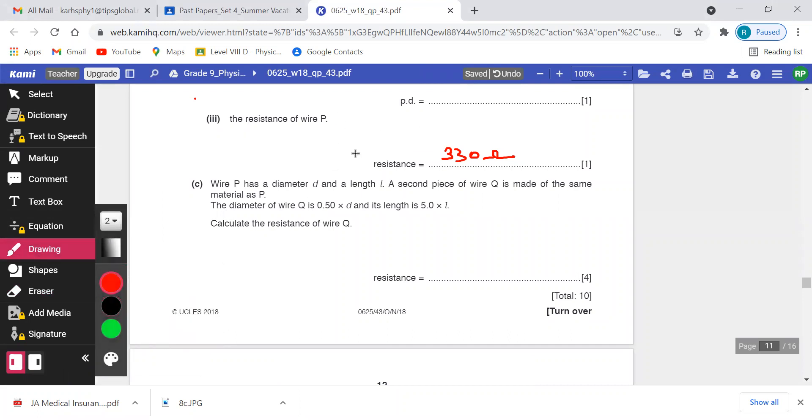From the previous step, you found that the resistance was 330 ohms. I'll take this as R1 or just R. So from the previous step, we found that resistance R equals 330 ohms.